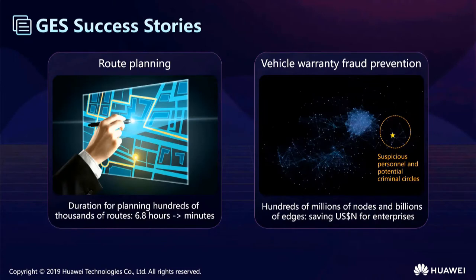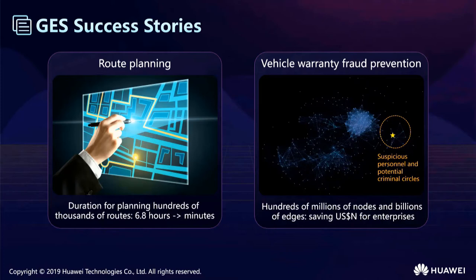Here are two successful cases of GES. One is routing planning: if a routing has 100,000 nodes and lines, it would normally take 6.8 hours to finish planning, but with GES it may only take a few minutes, greatly improving traffic planning efficiency. Another case is auto insurance fraud prevention. Using GES to analyze the relationships of all buyers across a graph with 1 billion nodes and 100 billion edges, you can identify fraud-linked groups, which can save millions for enterprises.